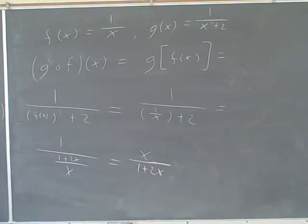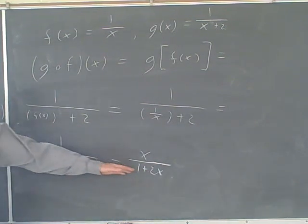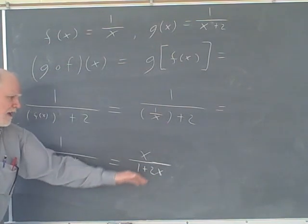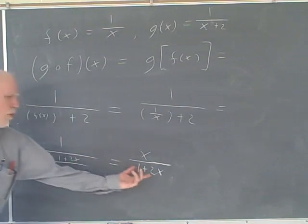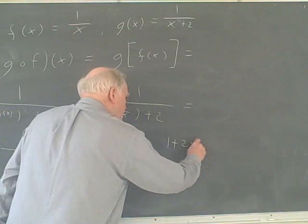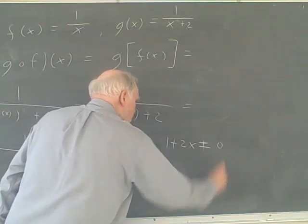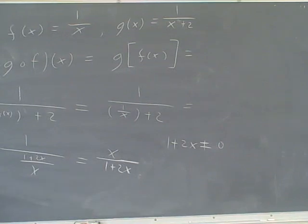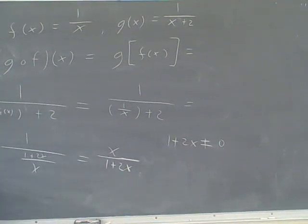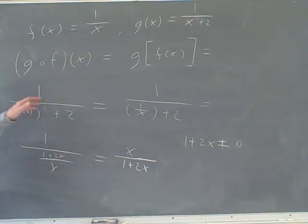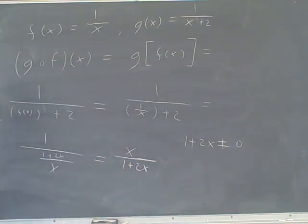And now we go to find the domain. When I look at this, if I look at the result, I might say, well, the only problem I have is I can't put 0 on the denominator, so 1 plus 2x cannot equal 0. I might say that and be done with it and say, oh, I'm done with the problem. But that's not quite what happens. We've done a lot of work on this to get from here, really here, down to here. And we might be missing something.